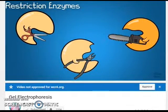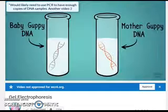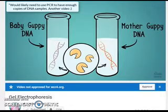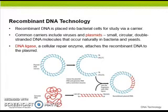There are many different types of restriction enzymes, and it's important to learn how they cut DNA differently. When comparing baby guppy DNA to adult mother guppy DNA, the same types of restriction enzymes should be used in both samples. Recombinant DNA technology is illustrated in the book and online. This DNA is placed into bacterial cells for study via a carrier — common carriers include viruses and plasmids, which are small circular double-stranded DNA molecules found naturally in bacteria and yeast.